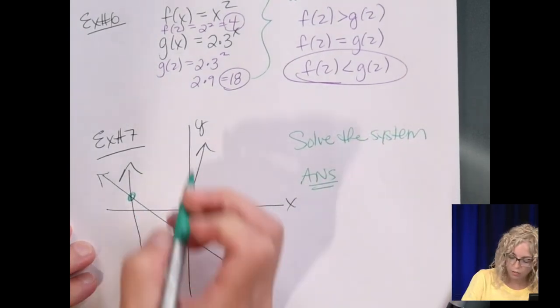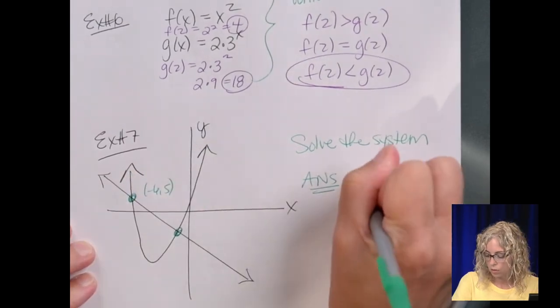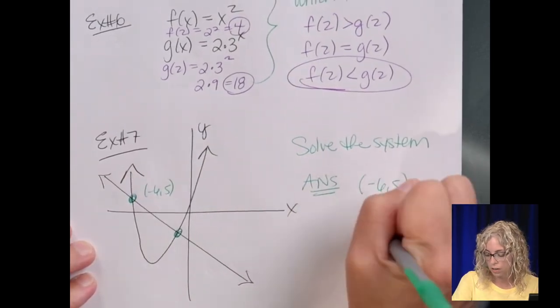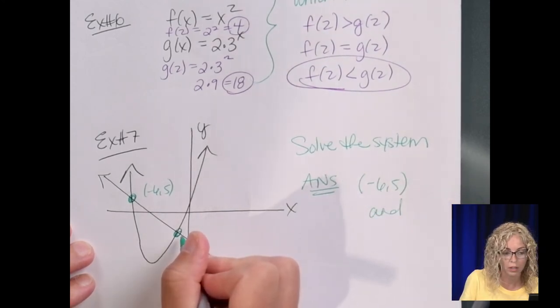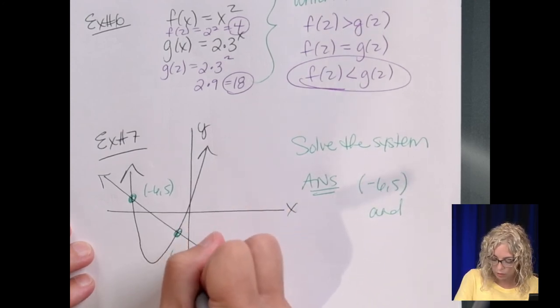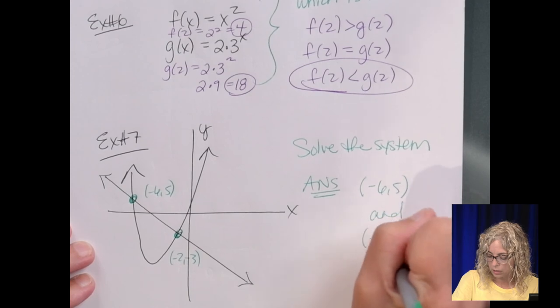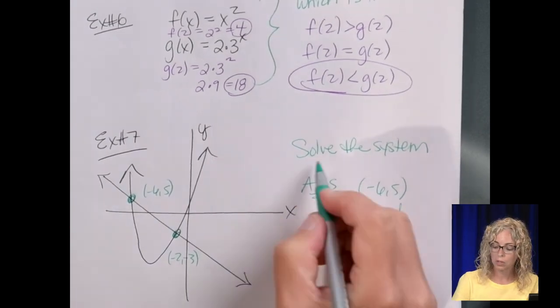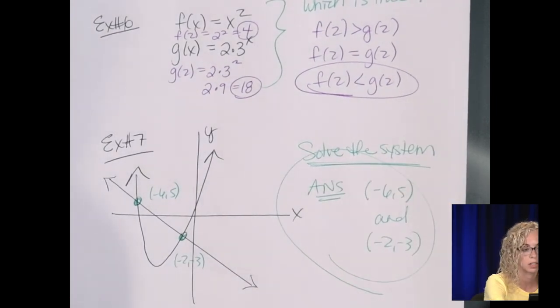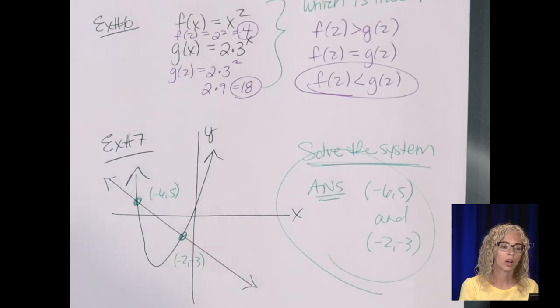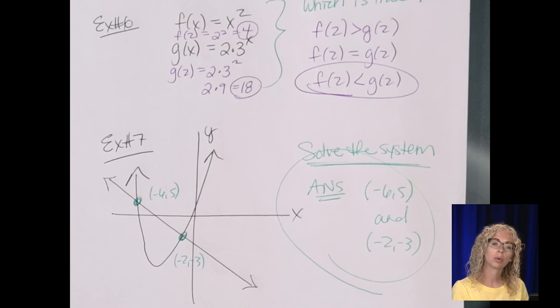So our answer would be this point right here which is negative 6, 5, so negative 6, 5 and this point right here, well according to my graph not the one I see let's say it's negative 2, negative 3 because my sketch wasn't so great. So the point when you solve any system graphically are the points where they intersect. And then in the last section you just have to graph the quadratic and linear function or actually they have the quadratic already graphed you just have to plot the line and then state the points where they intersect.